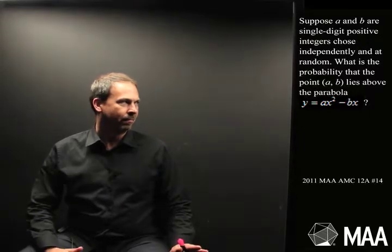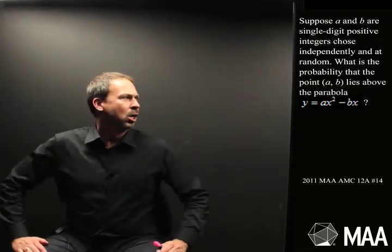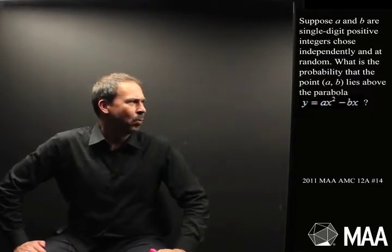Suppose a and b are single digit positive integers chosen independently and at random. So two numbers a and b, they're 1, 2, 3, 4, 5, 6, 7, 8, 9, single digits, positive, not zero. What is the probability that the point (a, b) lies above the parabola y equals ax squared minus bx?